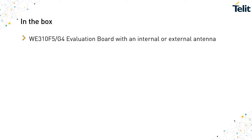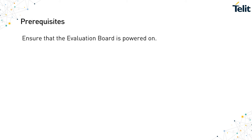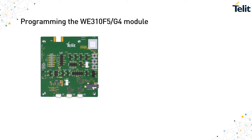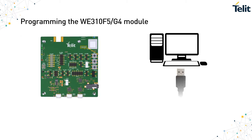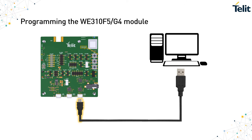The configuration kit includes the WE310 module evaluation board and a micro-USB cable to connect the board to your system. Before you begin, ensure that the WE310 module evaluation board is powered on. To program the evaluation board, connect the micro-USB UART1 port on the evaluation board to your system. Ensure to change the toggle switch position to Program.